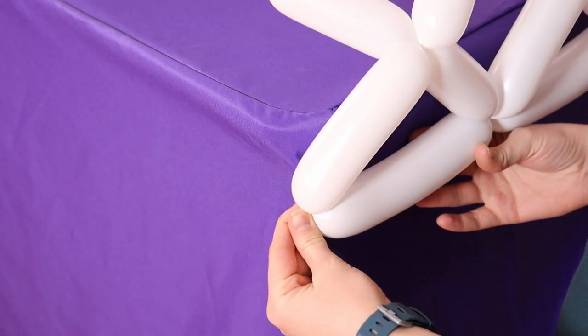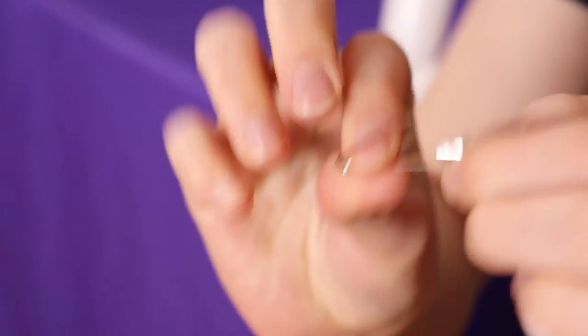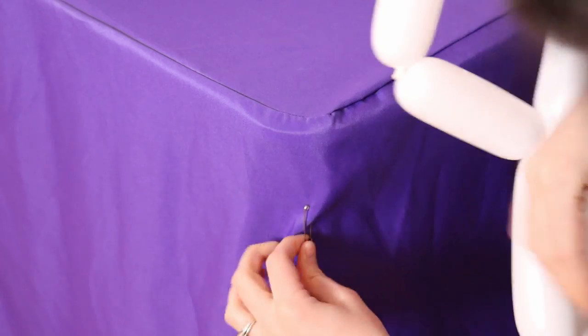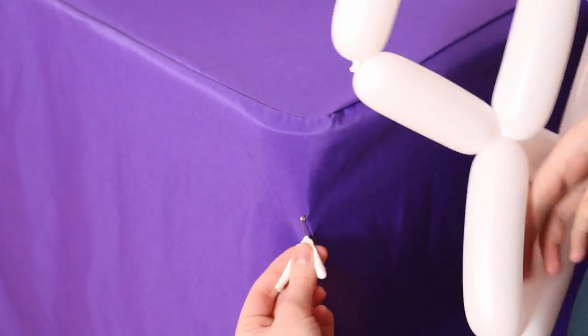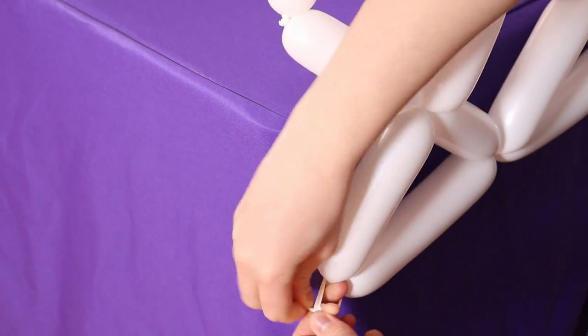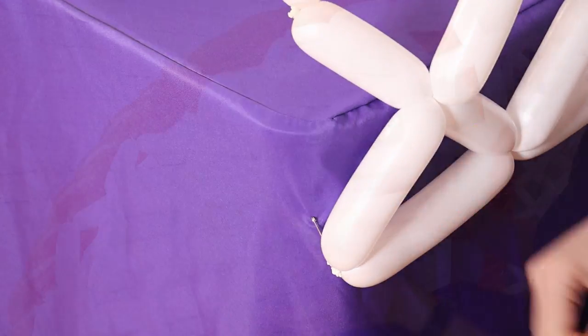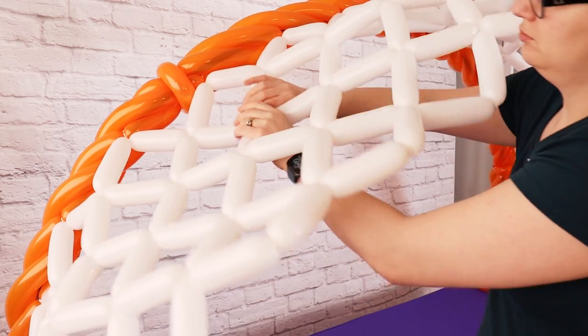The front edge of our net can be a little floppy because it's so far from our orange support frame. I'm going to give it a little bit of support on the front side using a safety pin. Yes, a safety pin near all of our balloons. So I'm just going to attach that pin to the front side of my tablecloth and then using a scrap bit of white 260 I'm going to tie the safety pin to the very front corner of our net and then trim away any excess balloon. This will just give it a little bit more support on the front side and help it maintain that nice curve.